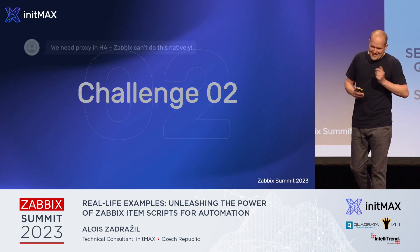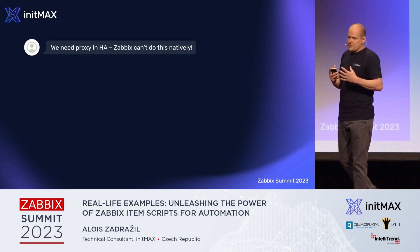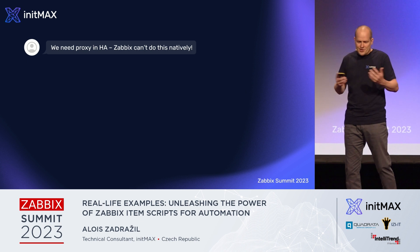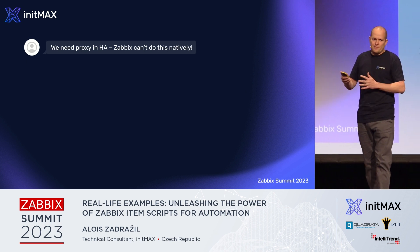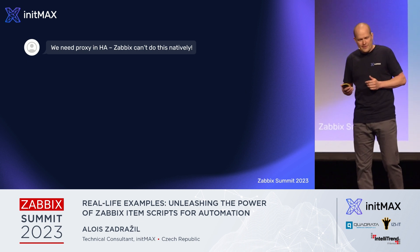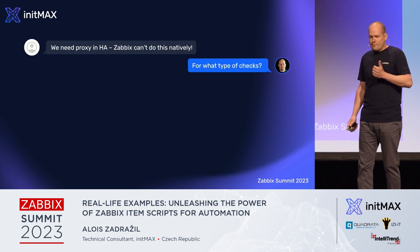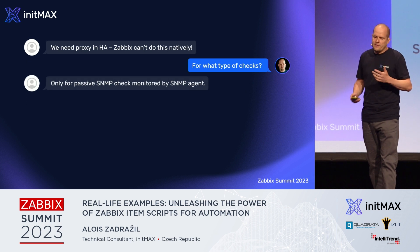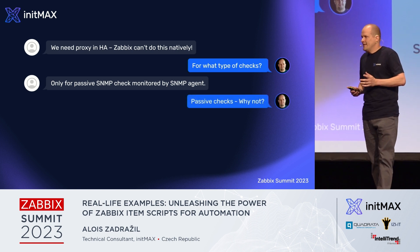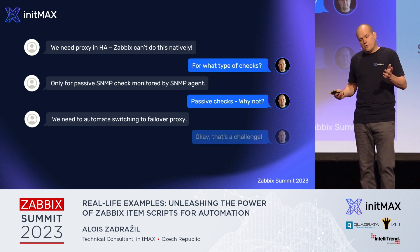Challenge number two: we need high availability for proxies. Customers told us they need all solutions in high availability. The discussion is almost the same — competitive products can use high availability. Zabbix can do this natively — not yet, but I hope we will have high availability at proxy level soon. I asked them for what type of checks they need HA, and they told me the same as the previous challenge: SNMP passive checks. It's a passive check — not a big problem. They only need to automate switching proxy when one proxy fails to another proxy.